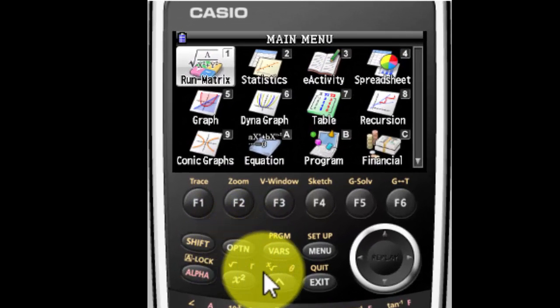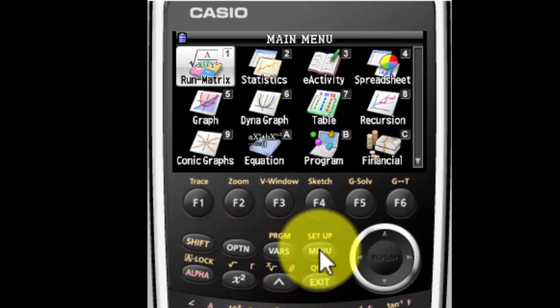When you turn your calculator on, it may or may not look like this. If it doesn't, hit the menu key and you'll see that. Also, your calculator may look different from mine. That's okay. If you know how to work one graphing calculator of Casio's, you can work all of them.